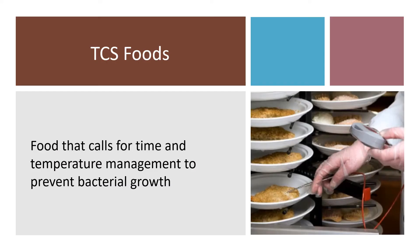Food that calls for time and temperature management to prevent bacterial growth that can cause foodborne illness is called TCS foods. TCS foods have numerous traits that make them ideal for bacterial growth, which includes moisture, protein, and a neutral or slightly acidic pH.